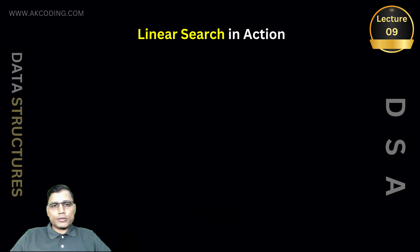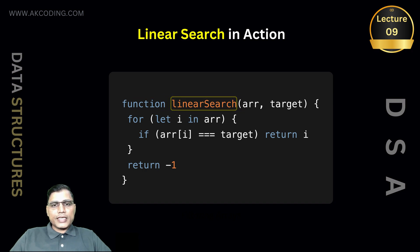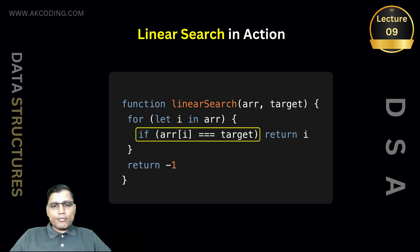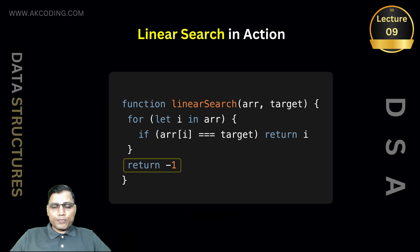Let's see what this looks like in code. Let's take an example in JavaScript. We create a function called linearSearch that accepts two arguments: number one, the array in which you will perform your search, and number two, the target value you are searching for. Inside the function body, we use a for loop that iterates through all array elements. Inside the loop, there is an if statement responsible for checking whether the element matches. If a match is found, it returns the index value of the array. If no match is found, it returns -1, indicating that no matching target value was found.